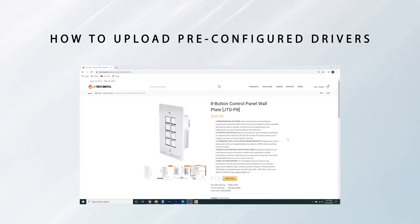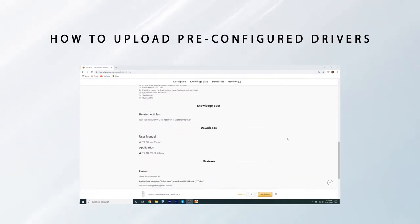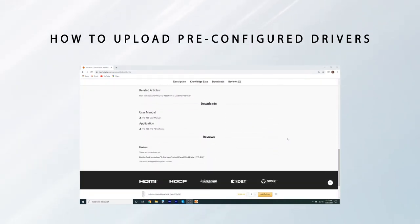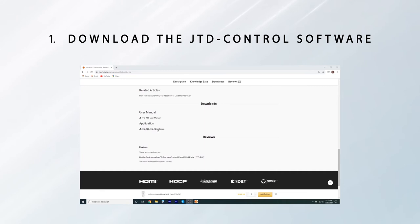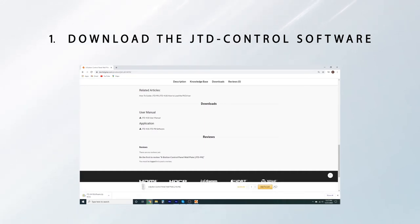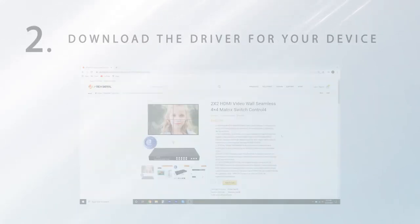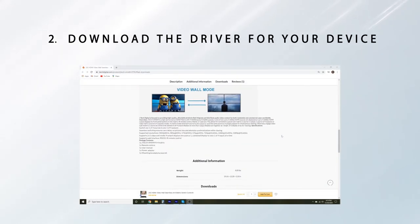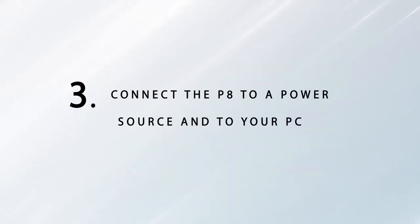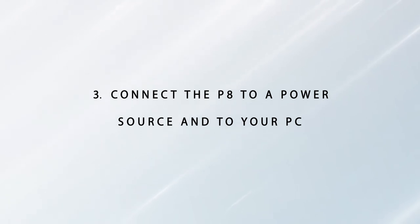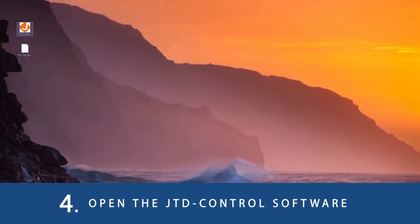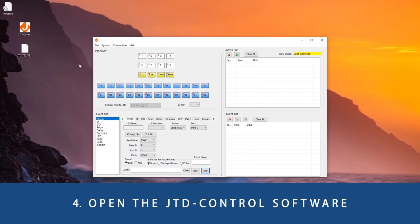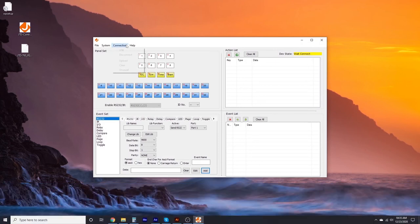In order to upload the pre-configured driver to your P8 control panel, download the latest JTD control software onto your PC. Download the driver files for the product you want to control. Connect the P8 control panel to the power source and to your PC with the mini USB cable. Open the JTD control software, click on Connections, then select USB.